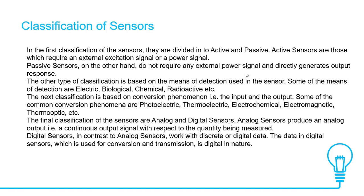Analog sensors produce an analog output — for example, a continuous output signal with respect to the quantity being measured. Digital sensors, in contrast to analog sensors, work with discrete or digital data. The data in a digital sensor, which is used for conversion and transmission, is digital in nature.